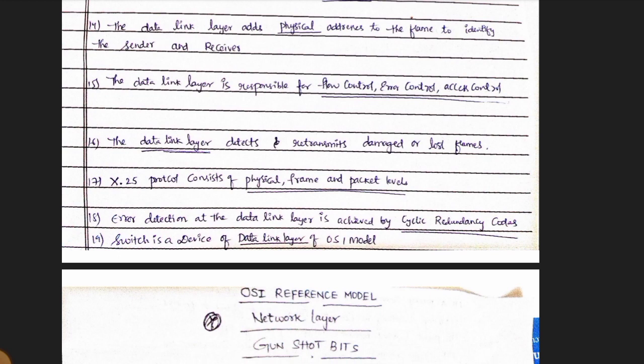X.25 protocol consists of physical, frame, and packet levels. Error detection in the data link layer is achieved by the CRC method.